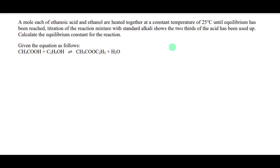A mole each of ethanoic acid and ethanol are heated together at a constant temperature of 25 degrees Celsius until equilibrium has been reached. Titration of the reaction mixture with standard alkali shows that two-thirds of the acid has been used up. Calculate the equilibrium constant for the reaction.